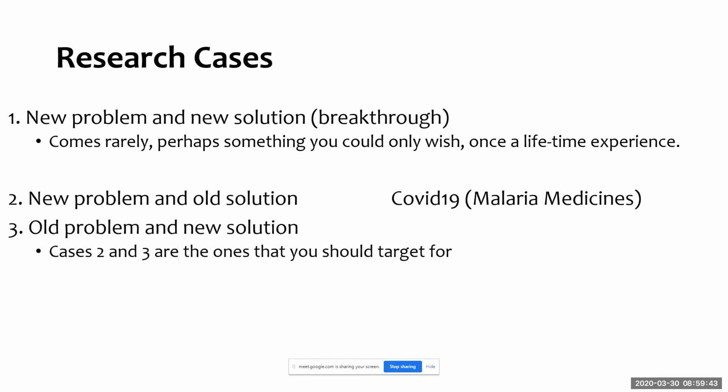Case three is old problem, new solution. An old problem like connecting people — five thousand years ago people connected by drawing pictures on pyramid walls, then they used animals to travel, then fax, telegrams, post, telephone, mobile phones, and the internet. These are all new solutions coming for the same old problem: how to communicate and connect with each other.